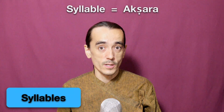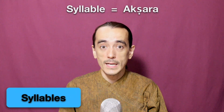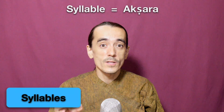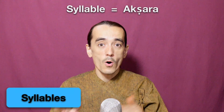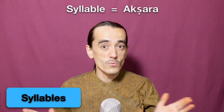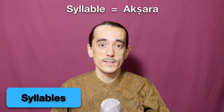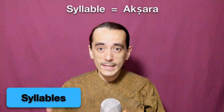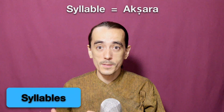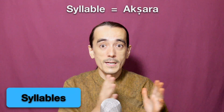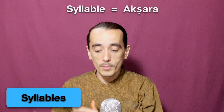So, what is a syllable? A syllable, or akshara in Sanskrit, is a unit of pronunciation that has one vowel sound with or without surrounding consonants. Each word in any language can be divided into syllables, which are sort of phonetic building blocks of a word.